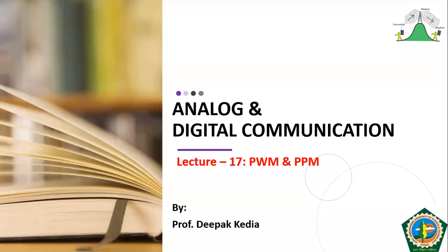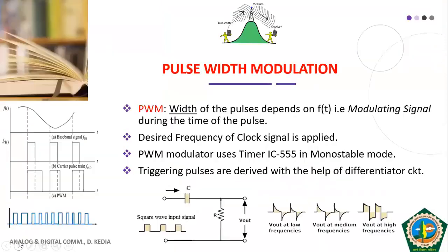We will finish pulse width modulation and then cover pulse position modulation. In pulse width modulation, the width of the pulse is varied in accordance with the modulating signal. As you can see in the figure, the width of these pulses is varying as the amplitude of the modulating signal changes.